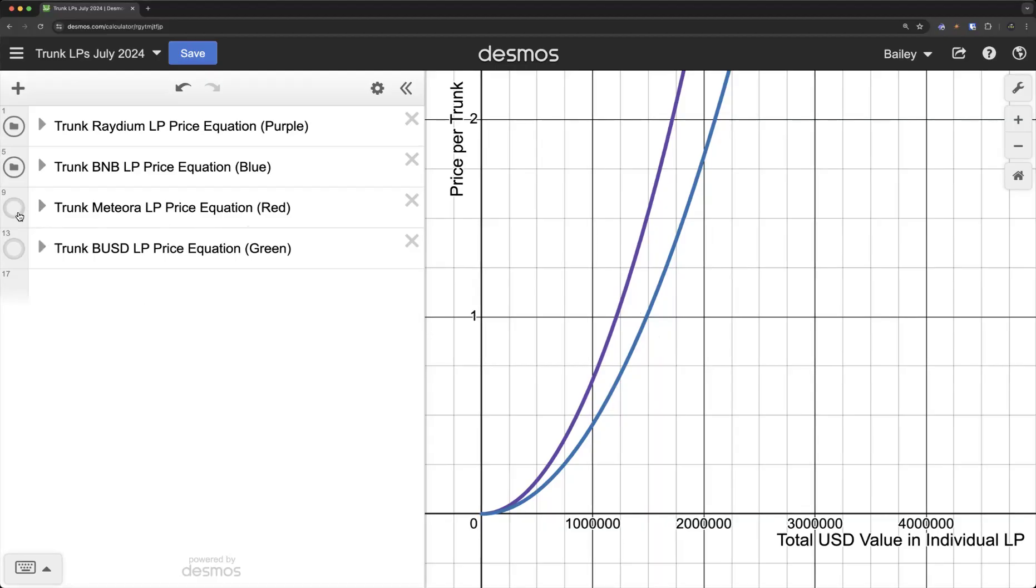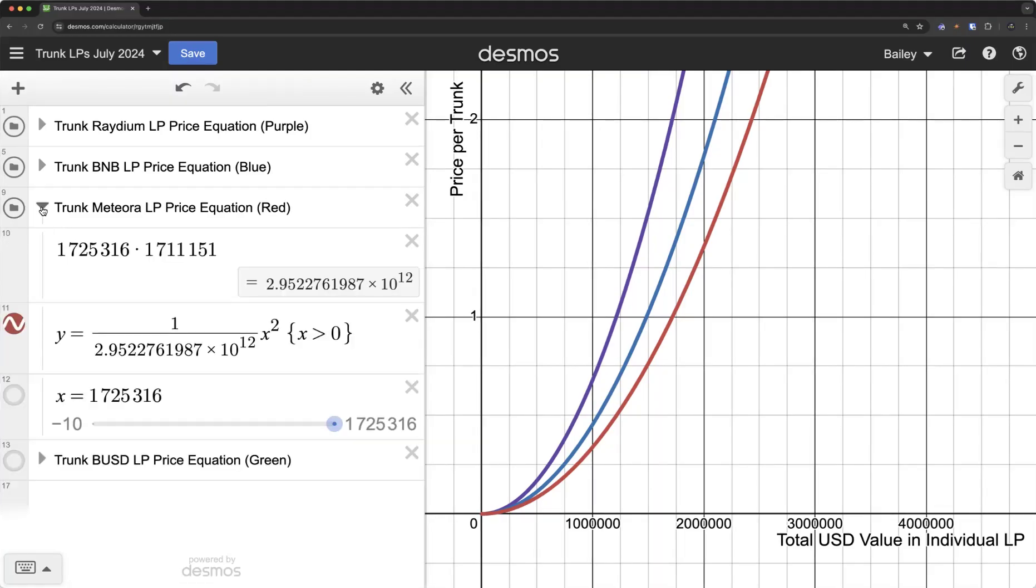The more volatile pool is going to be the Raydium pool because it has the least amount of liquidity. Our next pool, this is our Meteora pool. I put that in red. That's on Solana, and that's paired with USDC. We have here our constant product formula, our price equation. And if we take a look, right now at the time of this recording on Solana, we are just over that $1 mark, very close to $1.01 per trunk token right there.